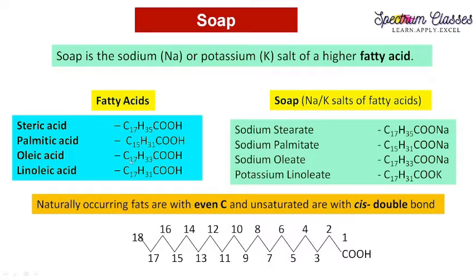In oleic acid, there is one unsaturation — it has one double bond. The double bonds present in naturally occurring fatty acids form a cis isomer. This is about fatty acids, and their sodium and potassium salts are formed accordingly.